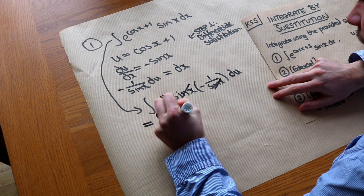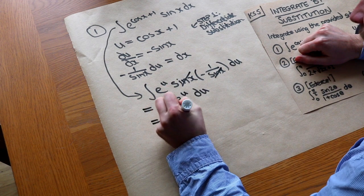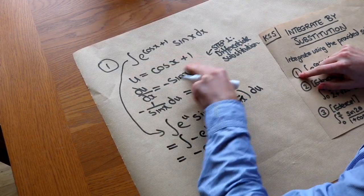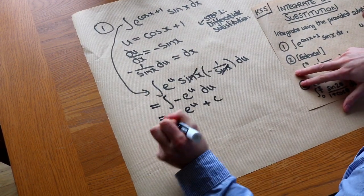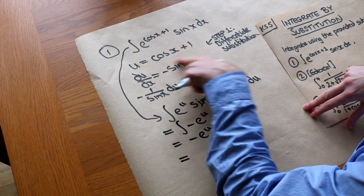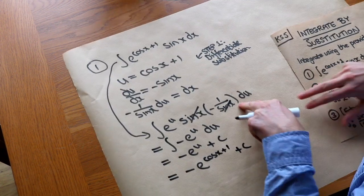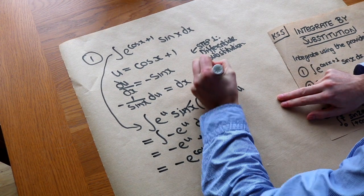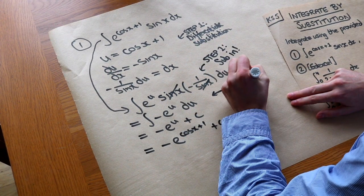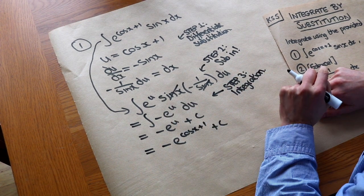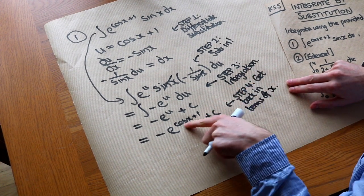We have minus e to the u du, which integrates to minus e to the u plus c. Since the substitution was just temporary to help us integrate, we substitute back u equals cos x plus 1 to get minus e to the power of cos x plus 1, plus c. To review: step 1 differentiate the substitution, step 2 substitute everything in, step 3 integrate, step 4 get back in terms of x.